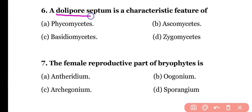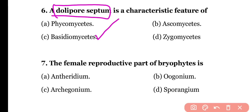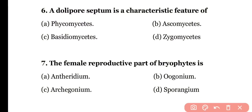Question number six: a dolipore septum is a characteristic feature of (a) Phycomycetes, (b) Ascomycetes, or (c) Basidiomycetes. The correct answer is option C — the dolipore septum is the characteristic feature of Basidiomycetes fungi.